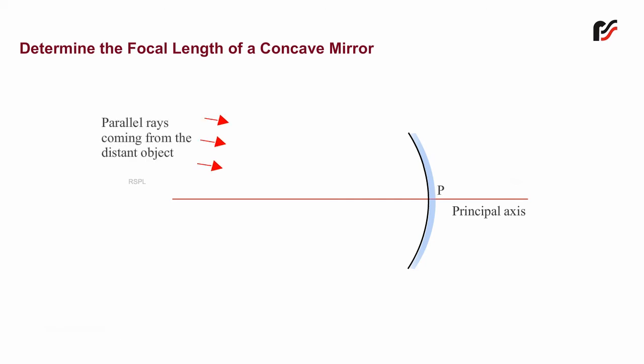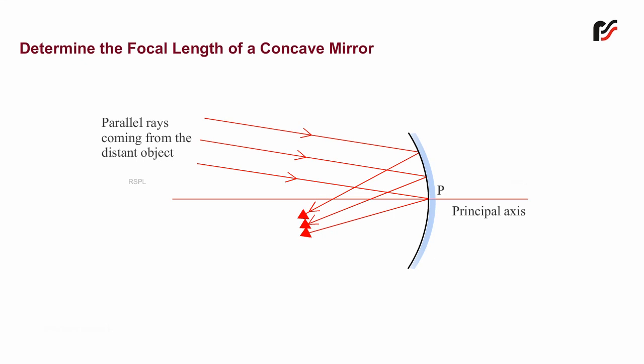When a parallel beam of light coming from a distant object such as a tree or pole is incident on a reflecting surface of a mirror, after reflection the rays actually meet, that is converge at a point, and this point is the principal focus of the mirror.